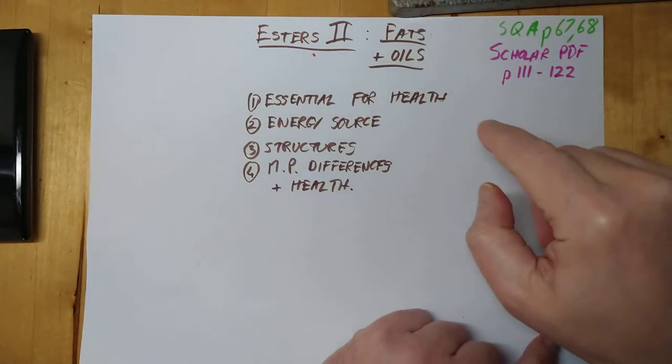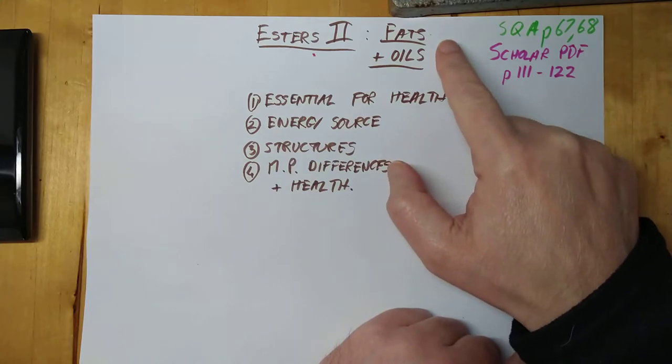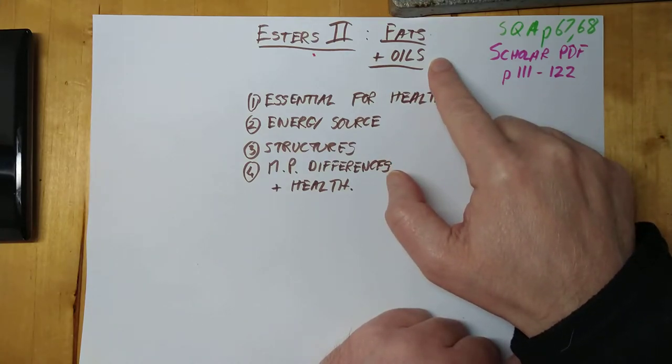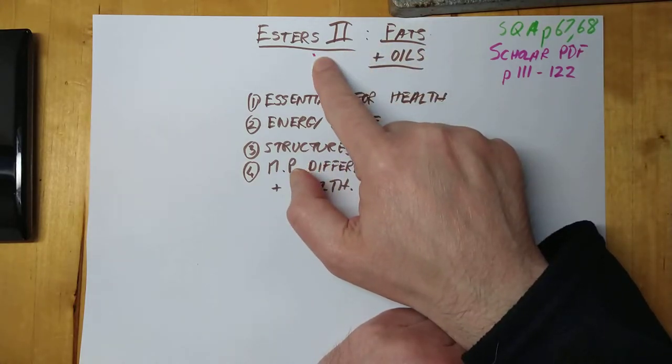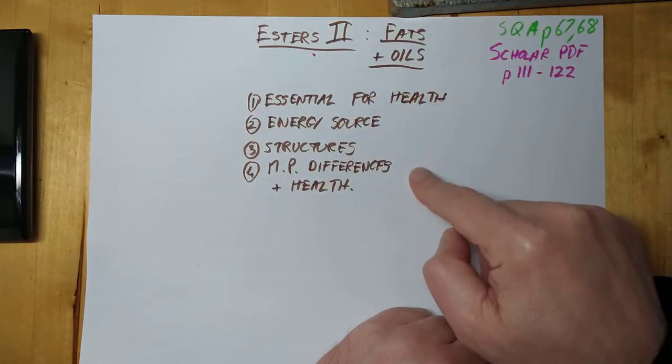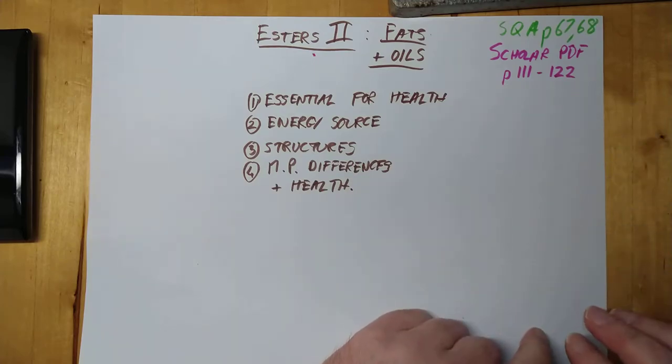Now, I'm just about to come along and tell you that every fat, like bacon rind, and every oil, like olive oil for example, are also examples of esters. Now, that might seem contradictory, but hopefully things will become clear. By the way, if you're interested, this is the SQA documentation, course spec, learning outcomes, and these are the pages in the Scholar PDF if you have access to that.